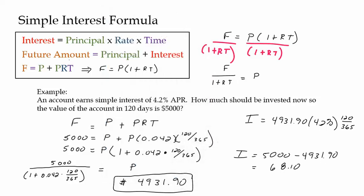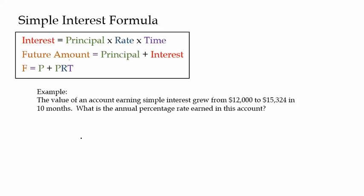Our last example is finding the interest rate. The value of an account earning simple interest grew from $12,000 to $15,324 in 10 months. What is the annual percentage rate? Here we're solving for R. The future value is $15,324, the principal is $12,000, and the time is 10 months — that's 10 out of 12 months, or ten-twelfths of a year.